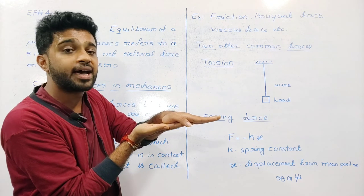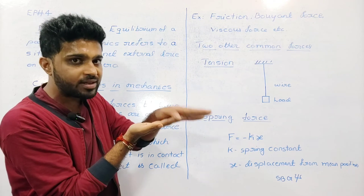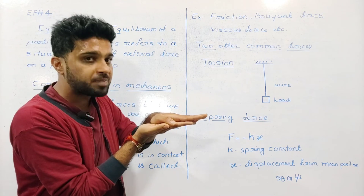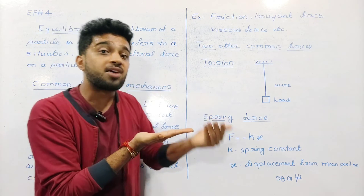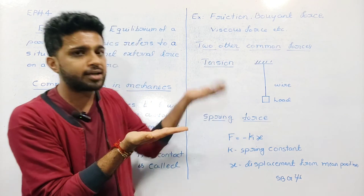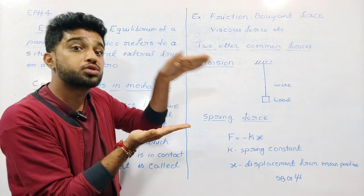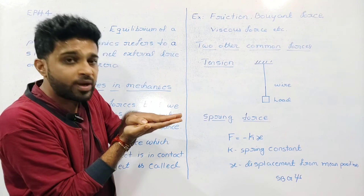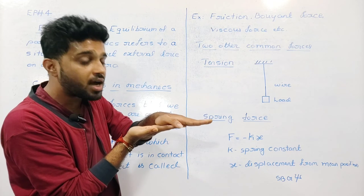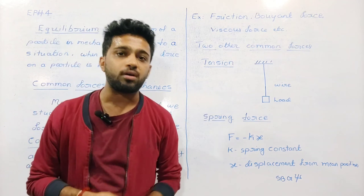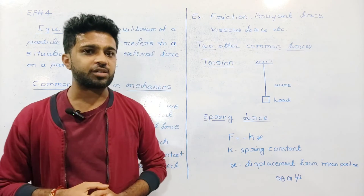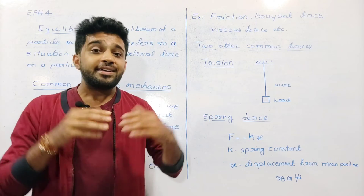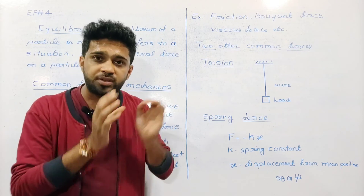Relative motion is applied on the object. The friction force opposes that relative motion. So friction is the opposing force that acts between two solid objects in contact.